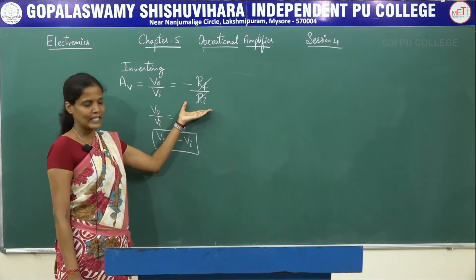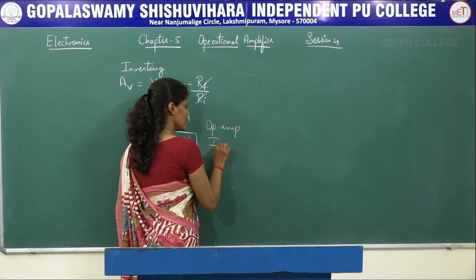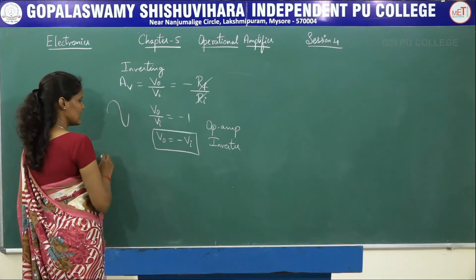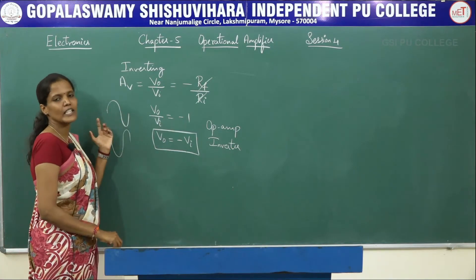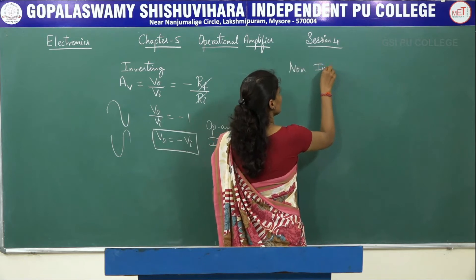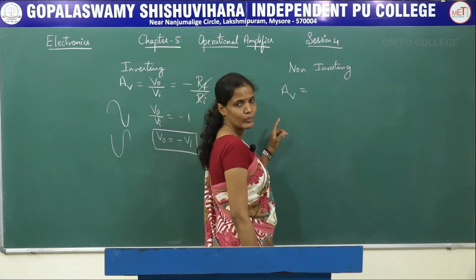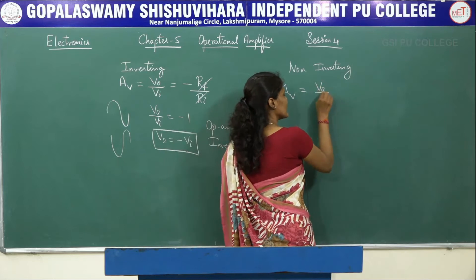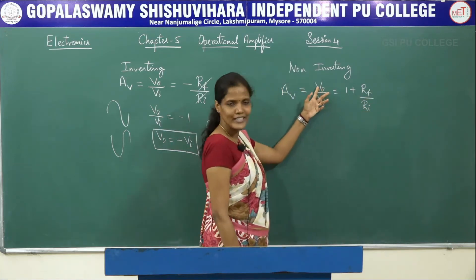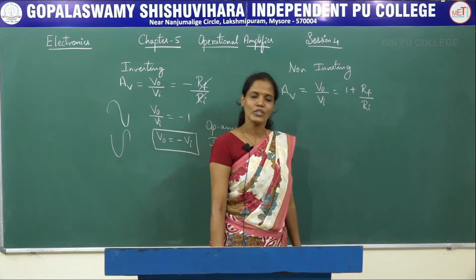When Rf equals Ri, that circuit will be called as the op-amp inverter. If the input signal is like this, we get the signal as just the inversion of the input signal. Coming to the non-inverting operational amplifier, the gain was given by Av = V0/Vi = 1 + Rf/Ri, where V0 is the output voltage, Vi is the input voltage, Rf is the feedback resistor, and Ri is the input resistor.